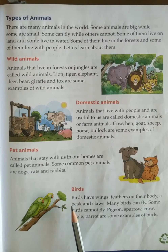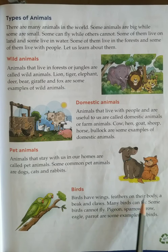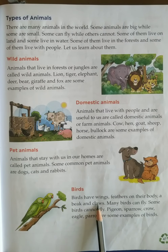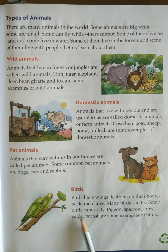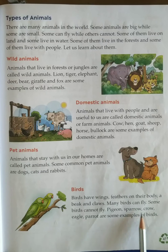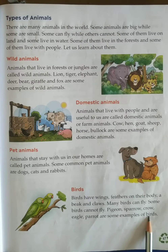Birds. Birds have wings, feathers on their body, a beak and a claw. Many birds can fly, some birds cannot fly. Pigeon, sparrow, crow, eagle, parrot are some examples of birds.